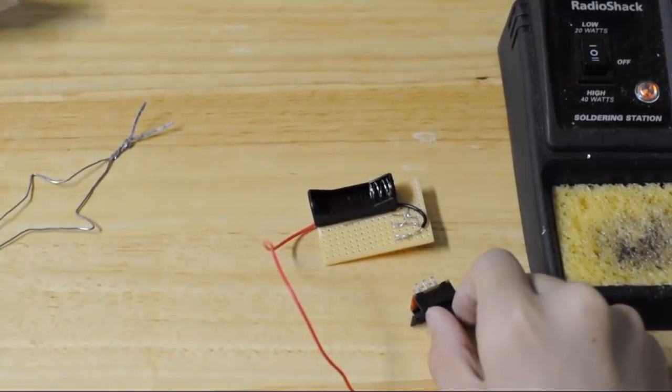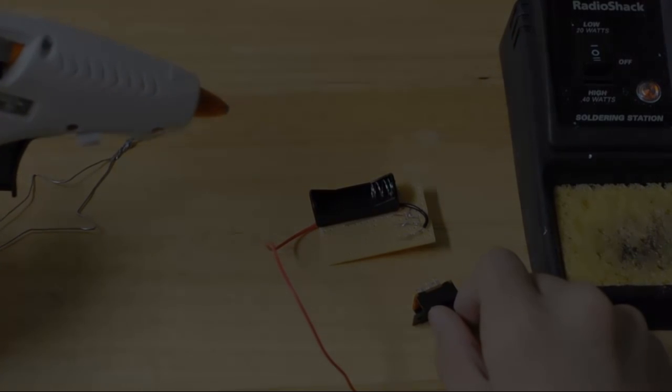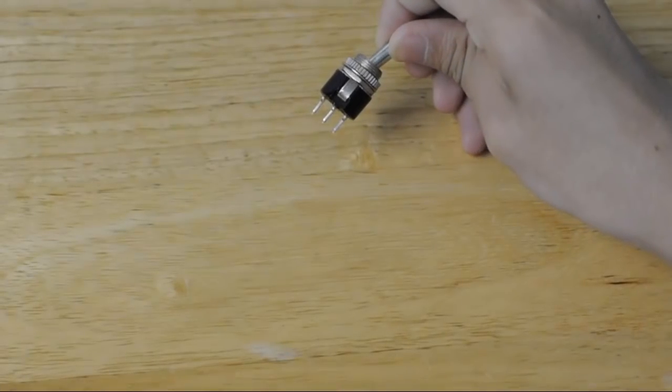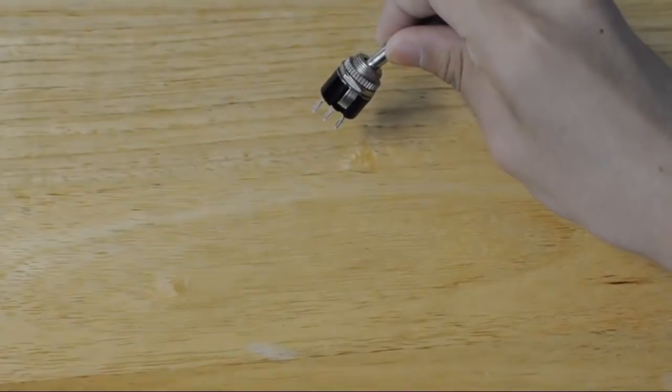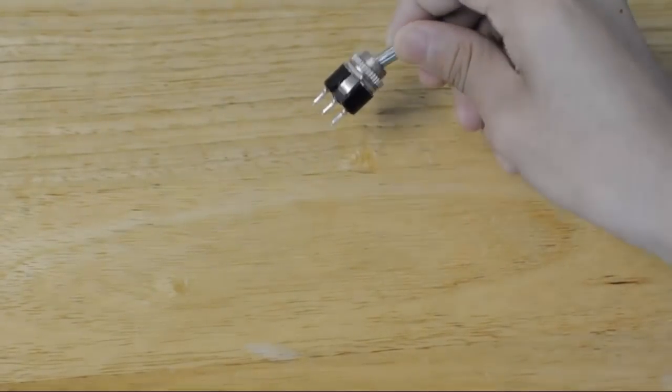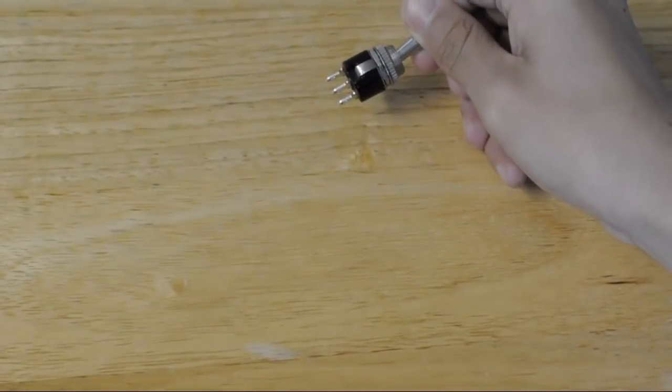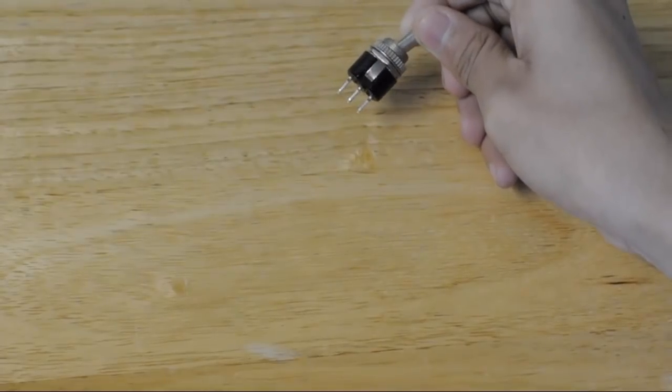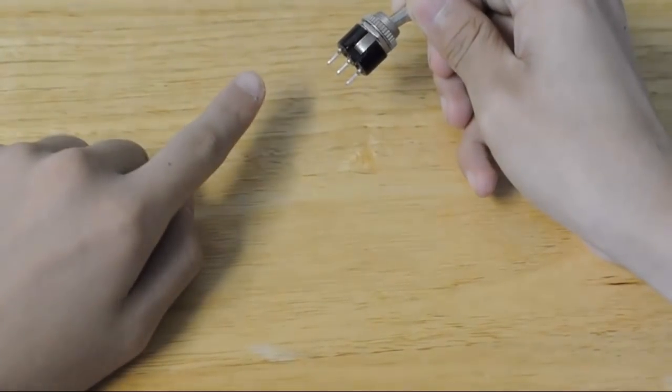Next, take a switch and hot glue it below the battery holder. What you're going to need is a toggle switch so you can turn your electricity on and off. When it's closed, the electricity flows and when it's open, the electricity doesn't flow. You can have as many pins as you want on the switch, but we only need to use two of them.